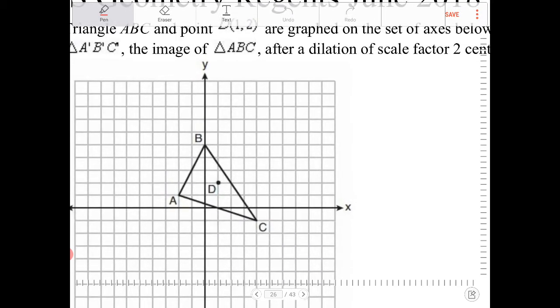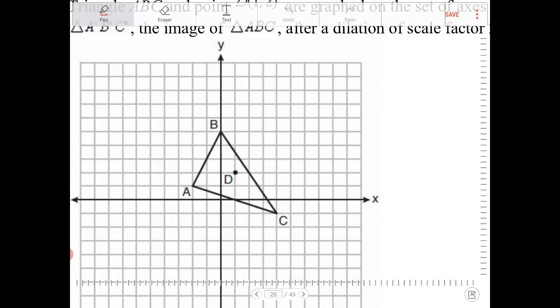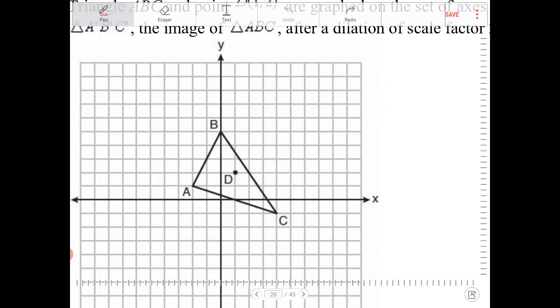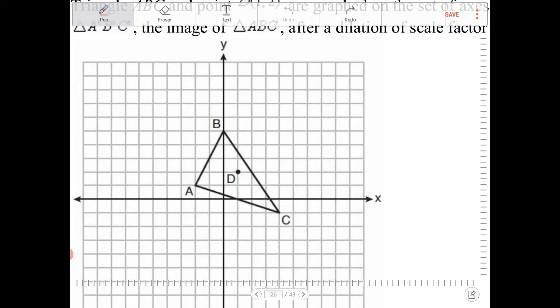Okay, so to dilate something on a coordinate grid, what we do is we connect all the vertices of the object to the center of dilation. And I am going to use a slightly thicker pen here. So we connect.